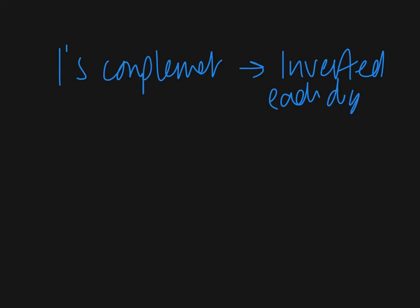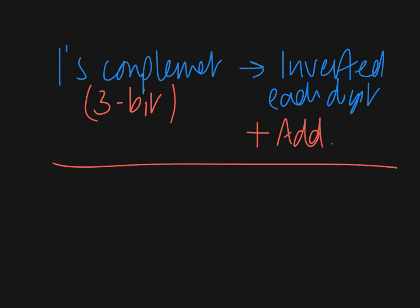But what that meant was that we had to, if we had an extra 4th digit, so if this is in a 3-bit system, and we then go and add them, and we have an extra 4th digit, we had to then add that afterwards. In 2's complement, this is a question for you.